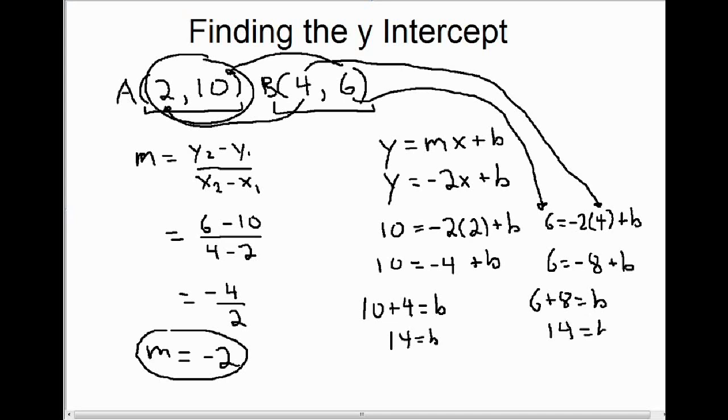But the point here is, before you can figure out what b is, you have to figure out what m is. You have to know what the slope is before you can get what the y-intercept is.